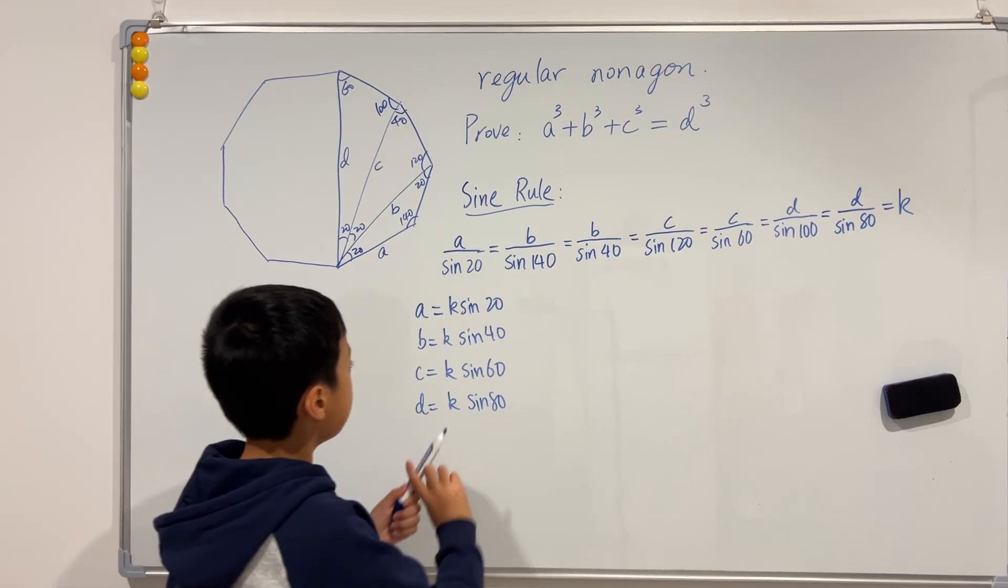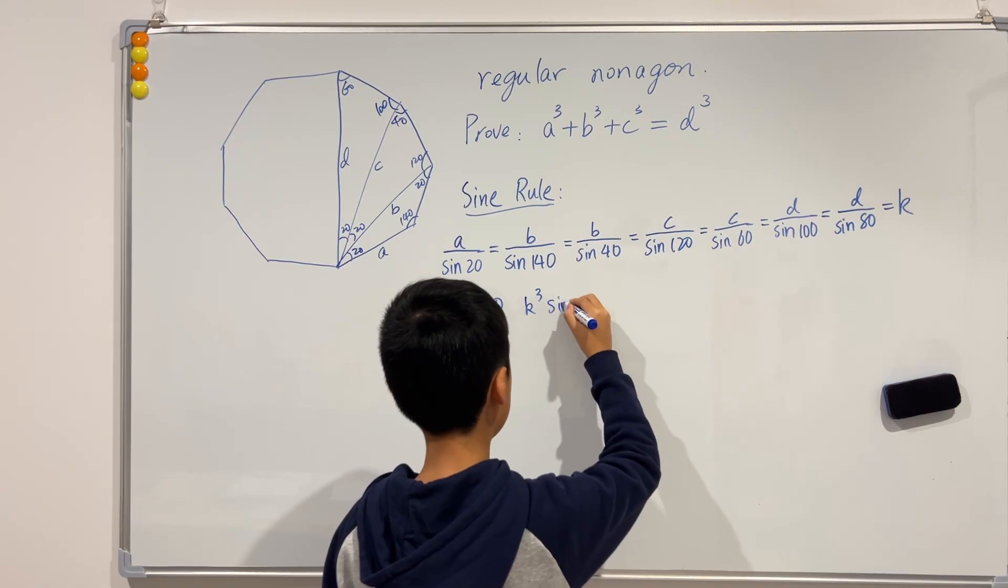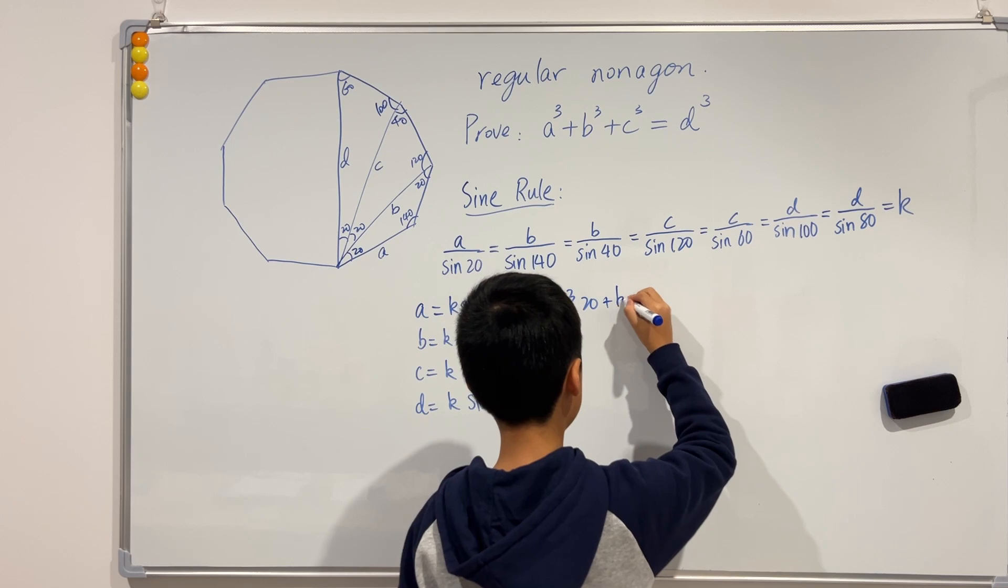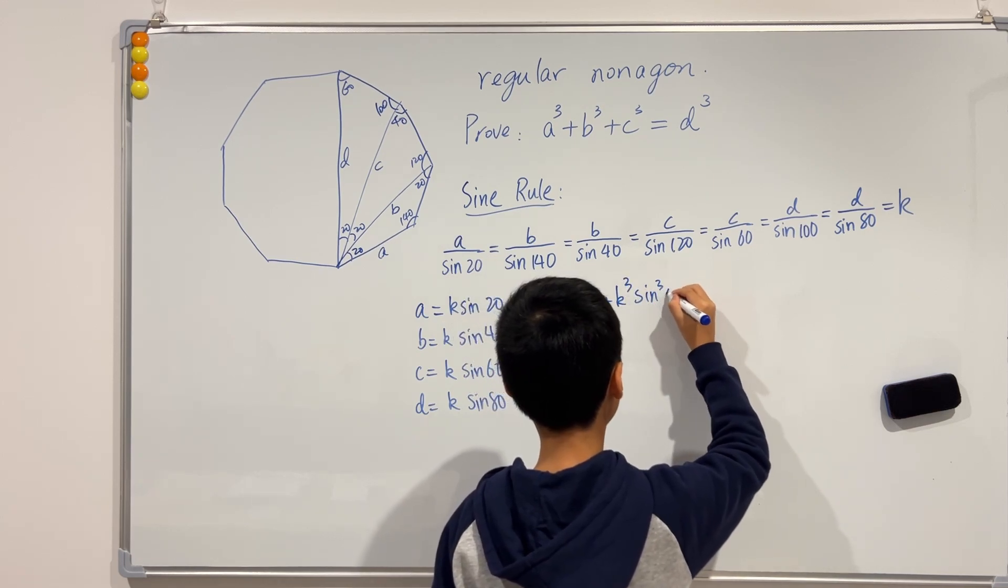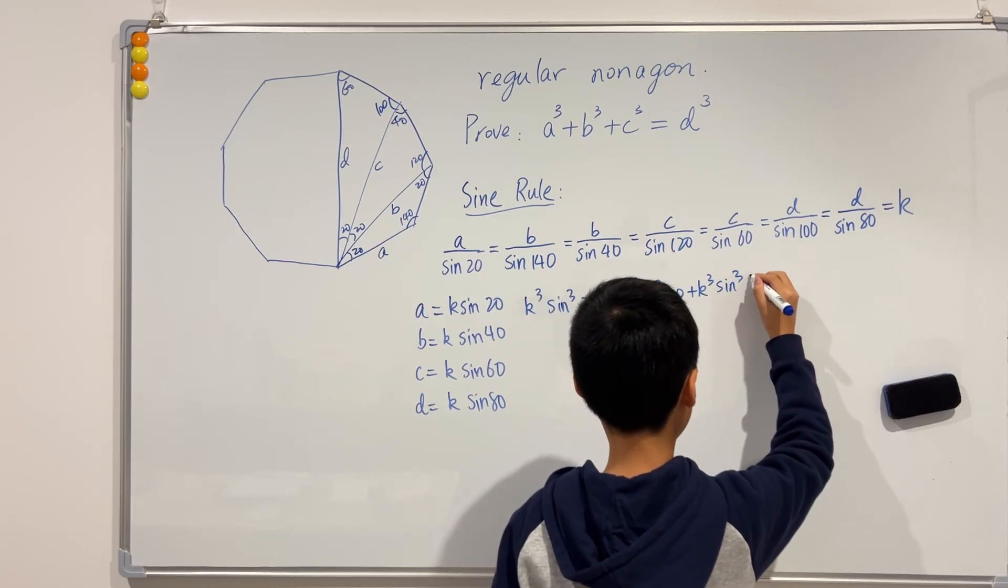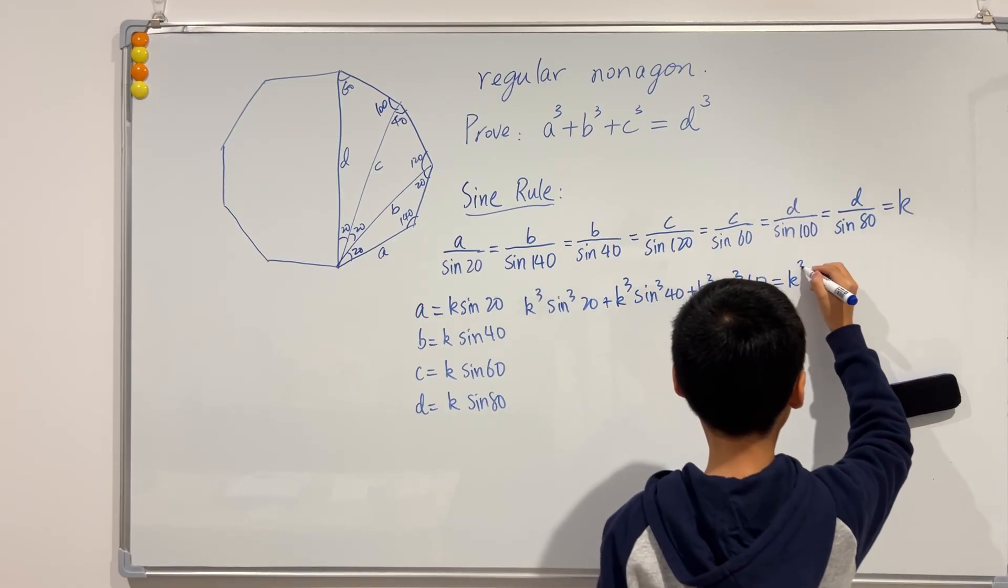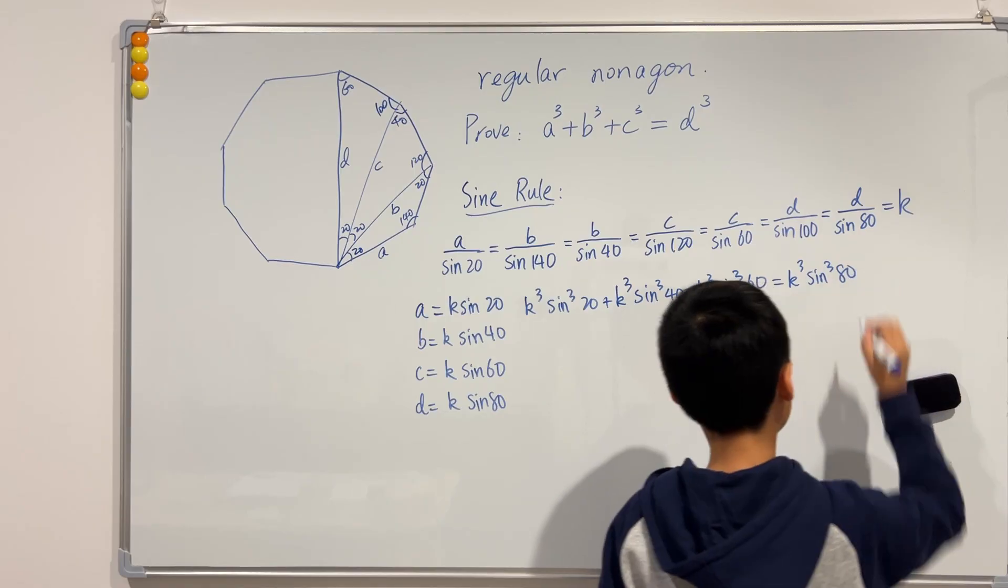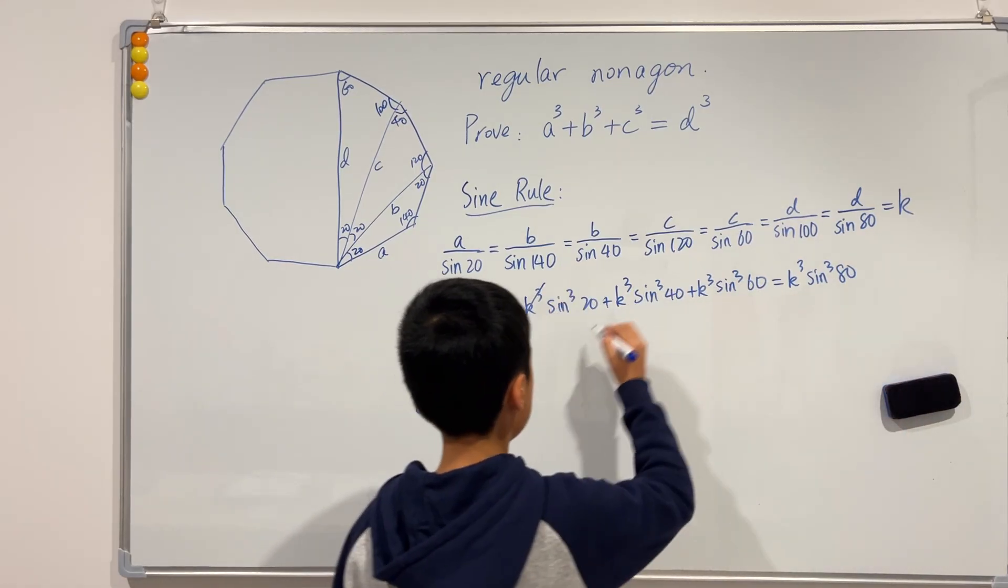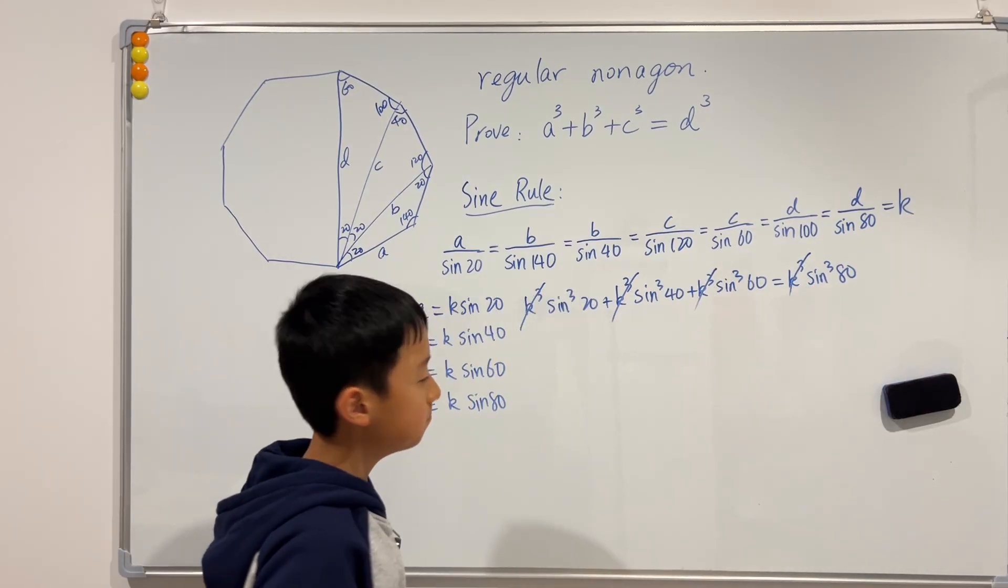So we have to prove that k cubed sine of 20 cubed plus k cubed sine of 40 cubed plus k cubed sine of 60 cubed equals k cubed sine cubed 80. Okay, the first thing we can do is we can, of course, cancel all of the k cubes out. Hmm, but now what do we do?